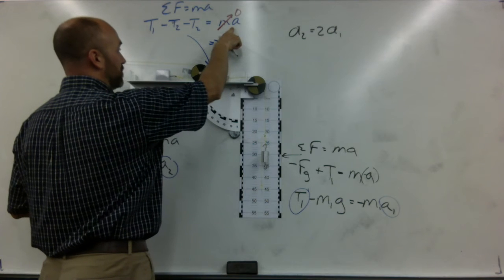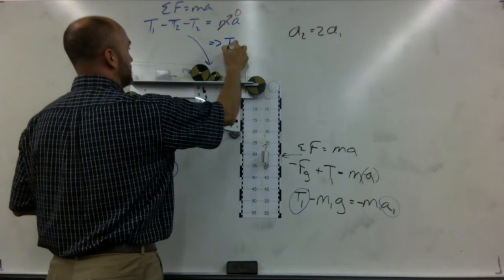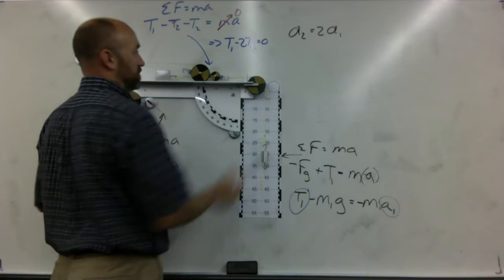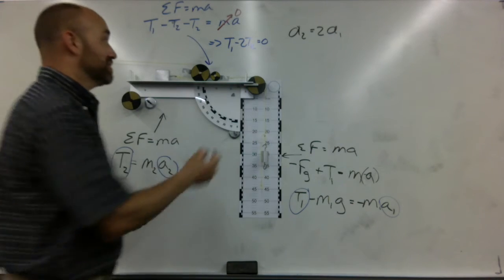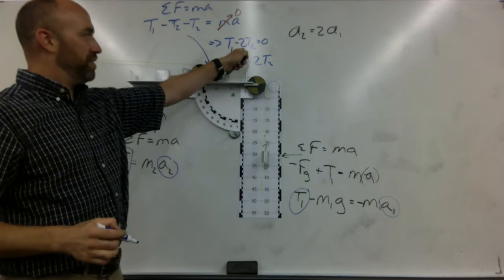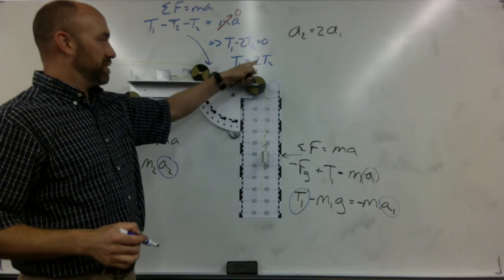Which is to say that if this side is zero, then we have t1 minus 2t2 equals zero. Which is to say t1 equals 2t2, because you can just add this to both sides and get it down there.